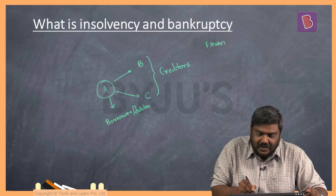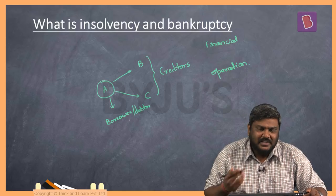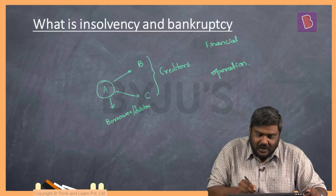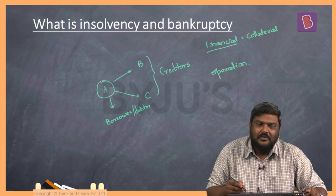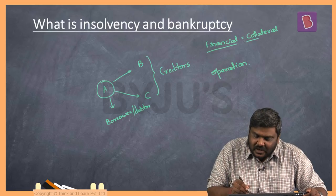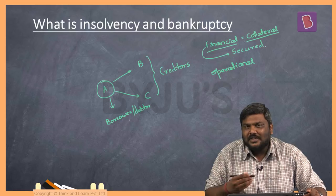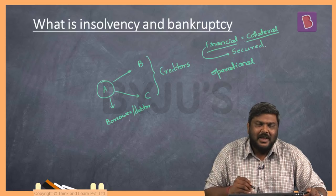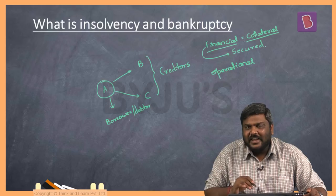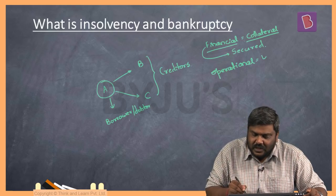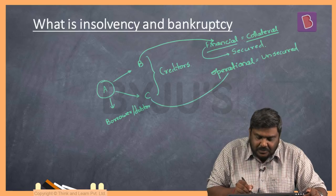One is referred to as a financial creditor and the second is referred to as an operational creditor. A financial creditor is one who has provided loans for certain consideration — they accept collateral from the borrower and in turn give a loan, so they are also referred to as a secured creditor. Whereas an operational creditor provides goods or services on credit to the buyer without taking collateral, so they are referred to as an unsecured creditor. In this example, bank B becomes a financial creditor and C becomes an operational creditor.